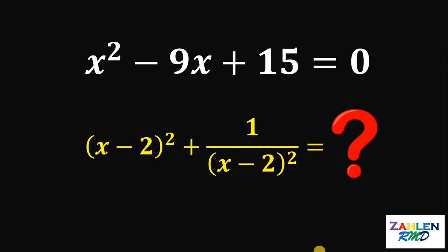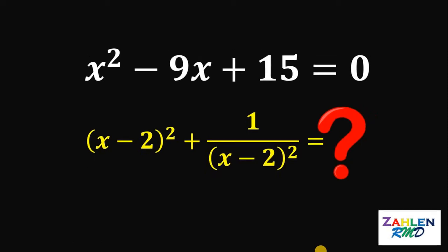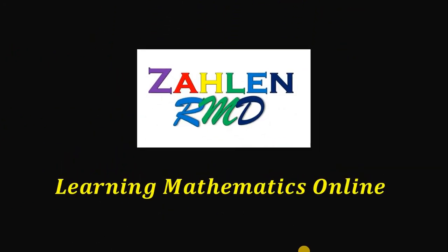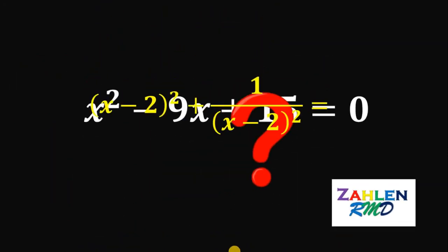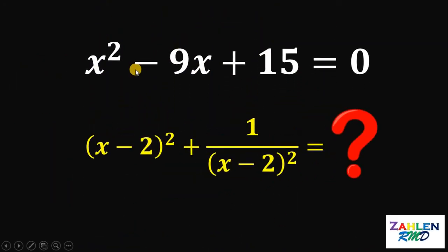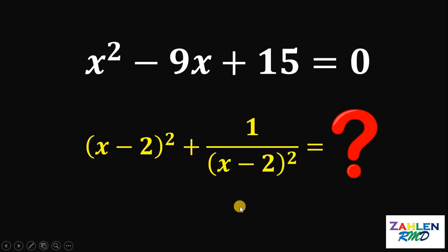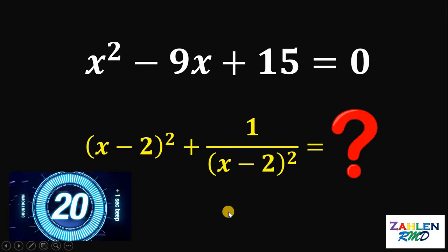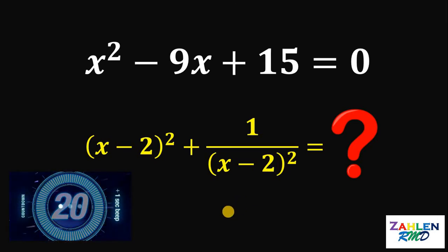Good day everyone, here's our math challenge for today. Here's our question: if x squared minus 9x plus 15 equals 0, then what is the value of x minus 2 quantity squared plus 1 over x minus 2 quantity squared? Now if you want to try this problem, we have 20 seconds and the timer starts now.